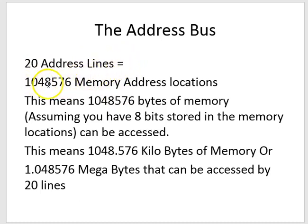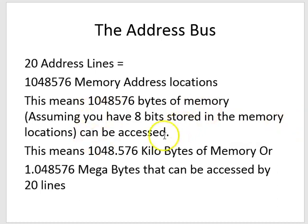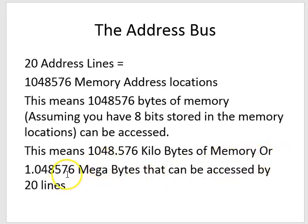Here's another example: 20 address lines means you can access 1,048,576 memory address locations. Assuming 8 bits stored per location, that's 1,048,576 bytes — or 1,048.576 kilobytes — which equals one megabyte of memory that can be accessed with a 20-line address bus.